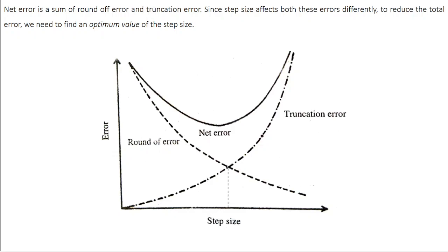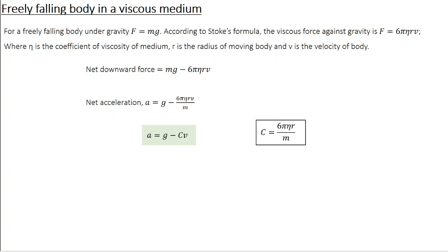Coming back to our original problem of analyzing motion in classical mechanical scenarios: in the previous class we analyzed the motion of a freely falling body. Today let's take up a more challenging problem — a freely falling body in a viscous medium. Here, two forces act on the body: the gravitational force acting in the downward direction, and the viscous force acting against gravity in the upward direction. Recalling Stokes' formula, the viscous force is given by 6πηrv, where η is the coefficient of viscosity, r is the radius of the moving body, and v is the velocity.